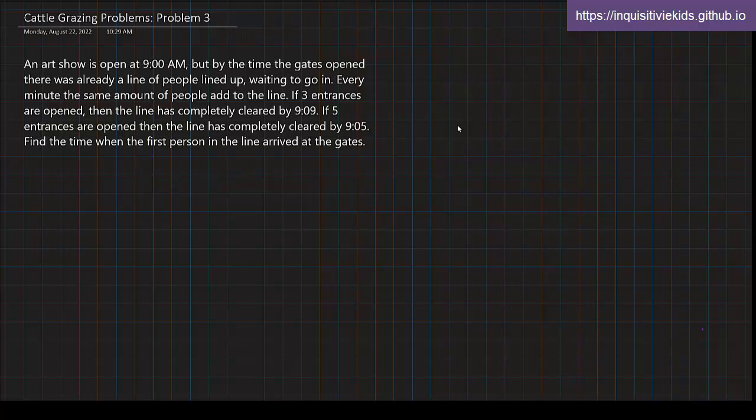An art show is open at 9 AM, but by the time the gates opened there was already a line of people waiting to go in. Every minute, the same amount of people add to the line. If three entrances are open, the line has completely cleared by 9:09. If five entrances are open, the line has completely cleared by 9:05. Find the time when the first person in line arrived at the gate.